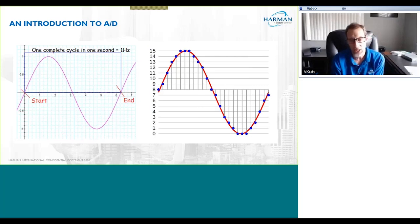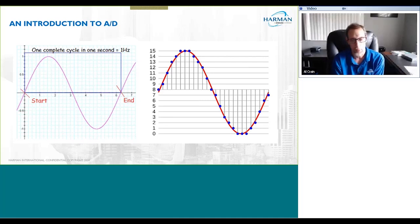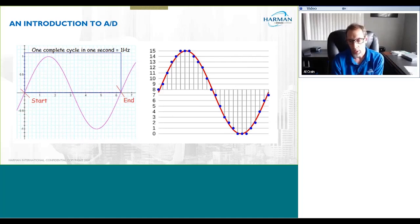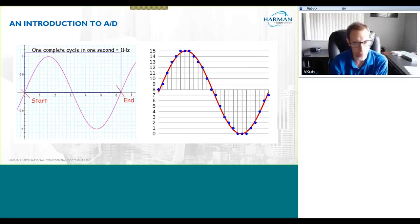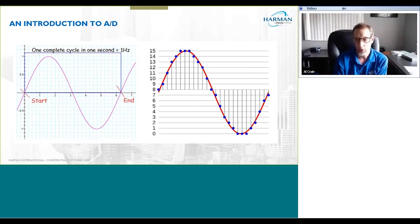What effectively happens here is we are going to 'sample' this waveform. Each blue dot you see on the right-hand image is a single sample taken of the waveform. It's pretty obvious and clear visually that the more samples you take, the better the end result is going to be. So we want lots of samples taken very frequently.